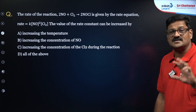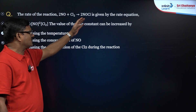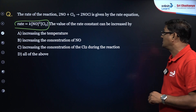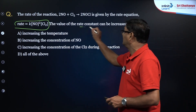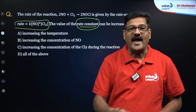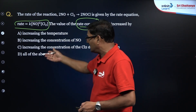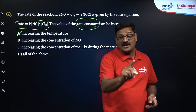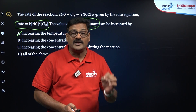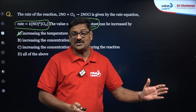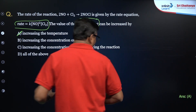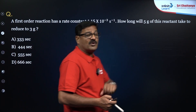MCQ: For the reaction 2NO + Cl₂ → 2NOCl, with rate = k[NO]²[Cl₂], the value of the rate constant can be increased by — this is a trap question. The rate constant is independent of everything except temperature. Whatever options are given — increasing concentration, pressure, etc. — increasing temperature is the only correct option. The rate constant depends only on temperature and the stoichiometry of the reaction, not on concentrations. The answer is option A (increase in temperature).